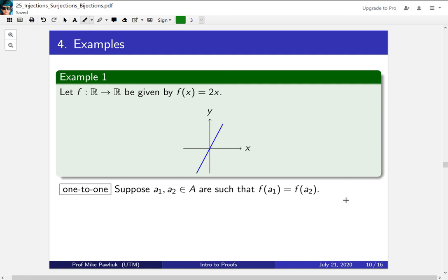So what does it tell us if they have the same output? Well, we know what the function is, it's 2x. So this tells us that 2·a₁ = 2·a₂. Cancel the 2's, this tells us that a₁ = a₂. So in this particular case, if you have the same output, you have to actually be the same input.